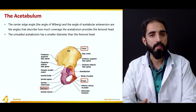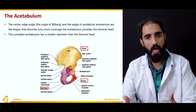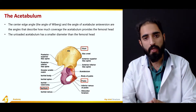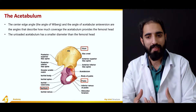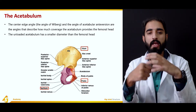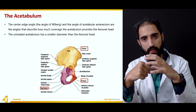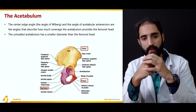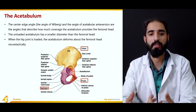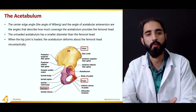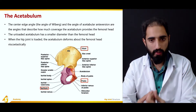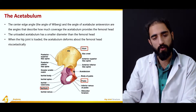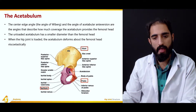The unloaded acetabulum is smaller in diameter compared to the femoral head, which makes it very shallow. For that reason we have the acetabular labrum, which deepens the cavity for the femoral head. In the unloaded position the femoral head is bigger than the acetabulum, but as the person goes into a weight-bearing position and the acetabulum is loaded, it actually expands because it is made up of three different bones — the ilium, the ischium, and the pubis — and it deforms to accommodate the femoral head viscoelastically.